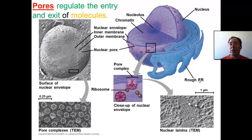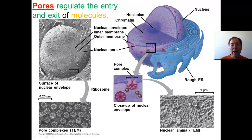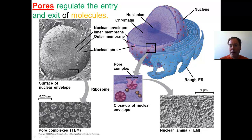Pores are protein channels that allow entry and exit of certain things — don't think that just anything can come into and out of the nucleus. It's important to understand that these pores are right next to the organelle called the endoplasmic reticulum, where bound ribosomes attach to do the translation portion of protein synthesis. There's also the nuclear lamina, which helps keep the structure of this nucleus. You can see the inner membrane and the outer membrane.